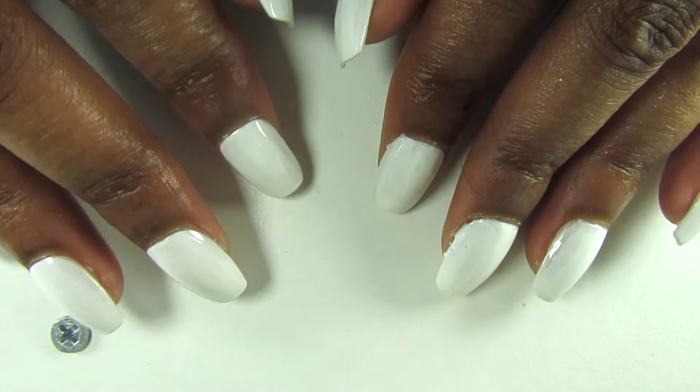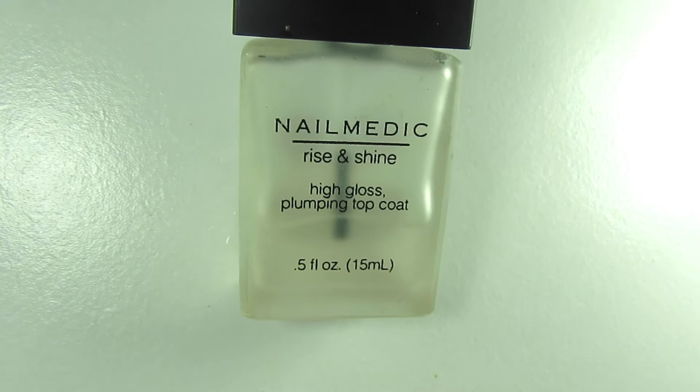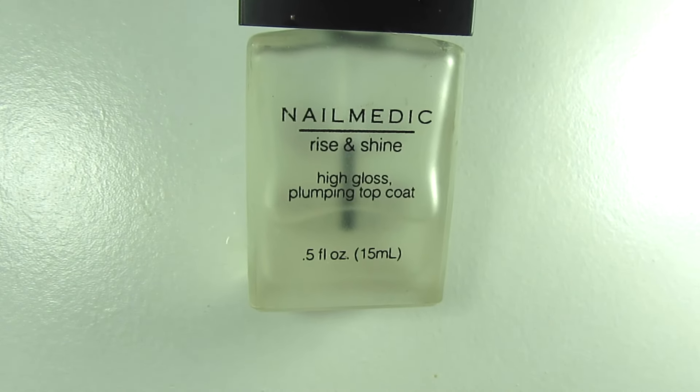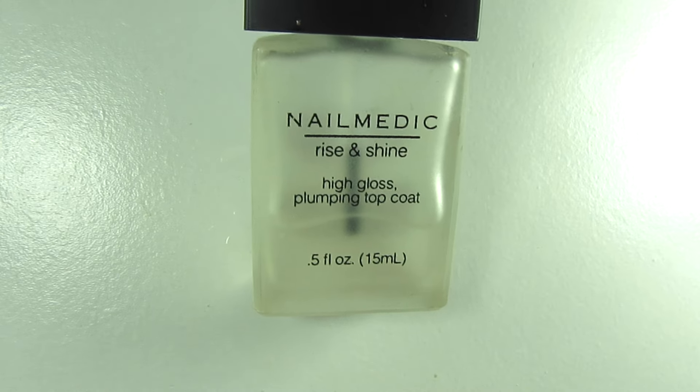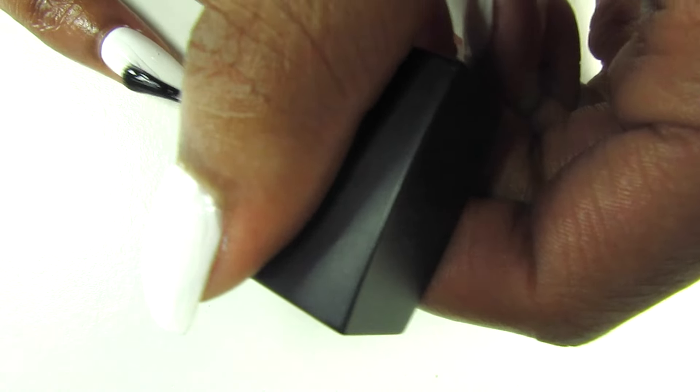Here are my nails after two coats of polish. They are really shiny but I'm still going to go in with a top coat to seal in the shine and add a little bit more. It's Nailmedic Rise and Shine high gloss plumping top coat that I got from Walmart and I love this top coat.